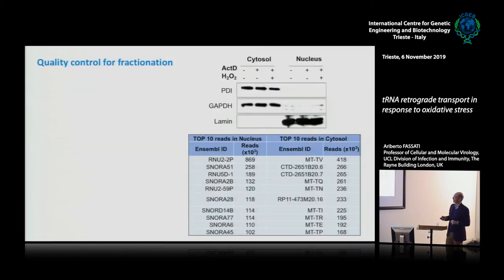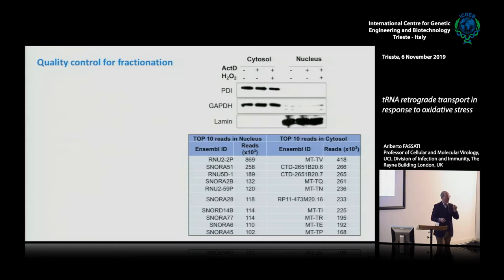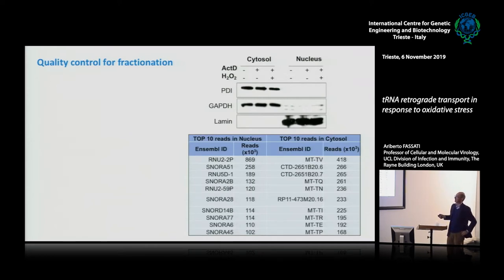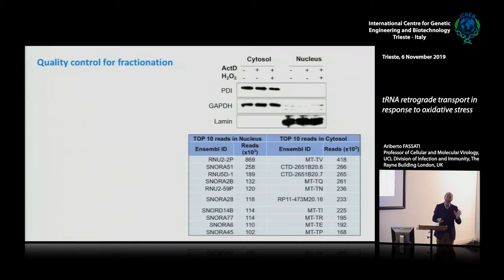Controls confirmed the fractionation worked: a cytosolic enzyme was mostly cytoplasmic, lamin was only nuclear. Looking at non-tRNA RNAs in the fractions, the nucleus contained mostly nuclear small RNAs, and the cytosolic fraction contained mostly mitochondrial tRNAs — confirming the fractionation was reliable enough to proceed with the analysis. Unfortunately replicate three didn't map well, which reduced statistical power, and we lacked funds to repeat the entire experiment.